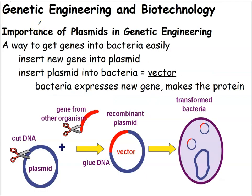So here's what we're going to do: we'll go through the same restriction enzyme process as before, but working on plasmids. We take bacteria, extract their plasmids, and hit them with the restriction enzyme, which cuts it open. At the same time, we cut the donor organism's DNA with the same restriction enzyme, leaving complementary sticky ends on both. The circle of plasmid DNA opens up, we add the gene in, and now we have a recombinant DNA plasmid — the old bacterial plasmid with the new section of gene we wanted inserted into it.